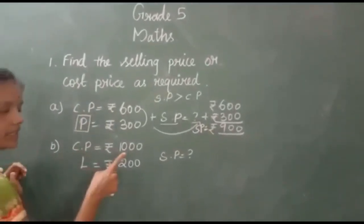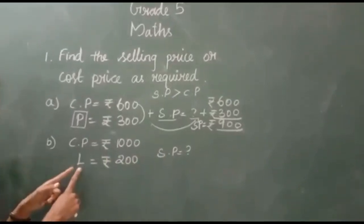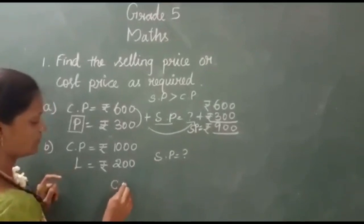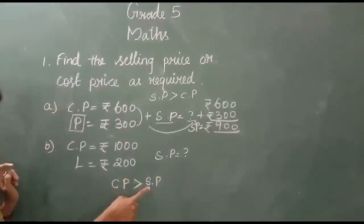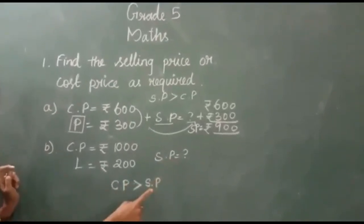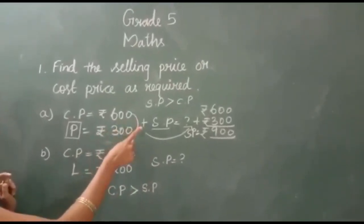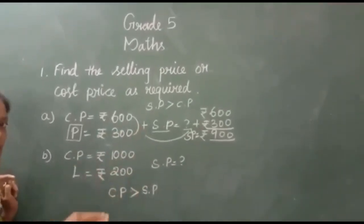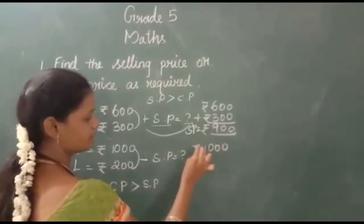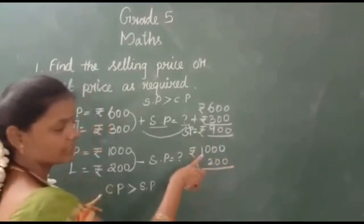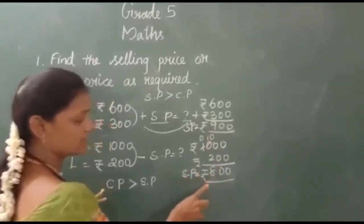Question number 2. Cost price is 1000, loss is 200. Here also we are going to find the selling price. In the case of loss, the cost price will be greater and the selling price will be lesser. The selling price we are going to find will be a lesser value. Since the value decreases, what operation do we have to do? We have to do subtraction. So we are going to subtract 200 from 1000, which gives us 800. The selling price is 800.